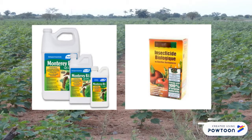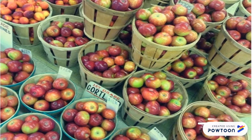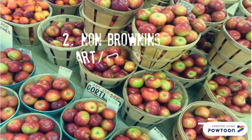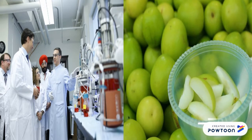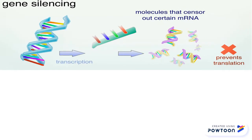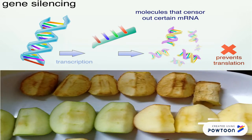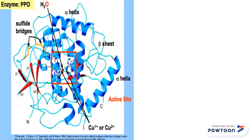The second example is the non-browning apple, also known as the Arctic Apple. Canadian scientists came out with a product — apples that have an ability to resist browning after being cut. This is done by silencing the gene responsible for making the enzyme that causes browning in apples, known as polyphenol oxidase (PPO).